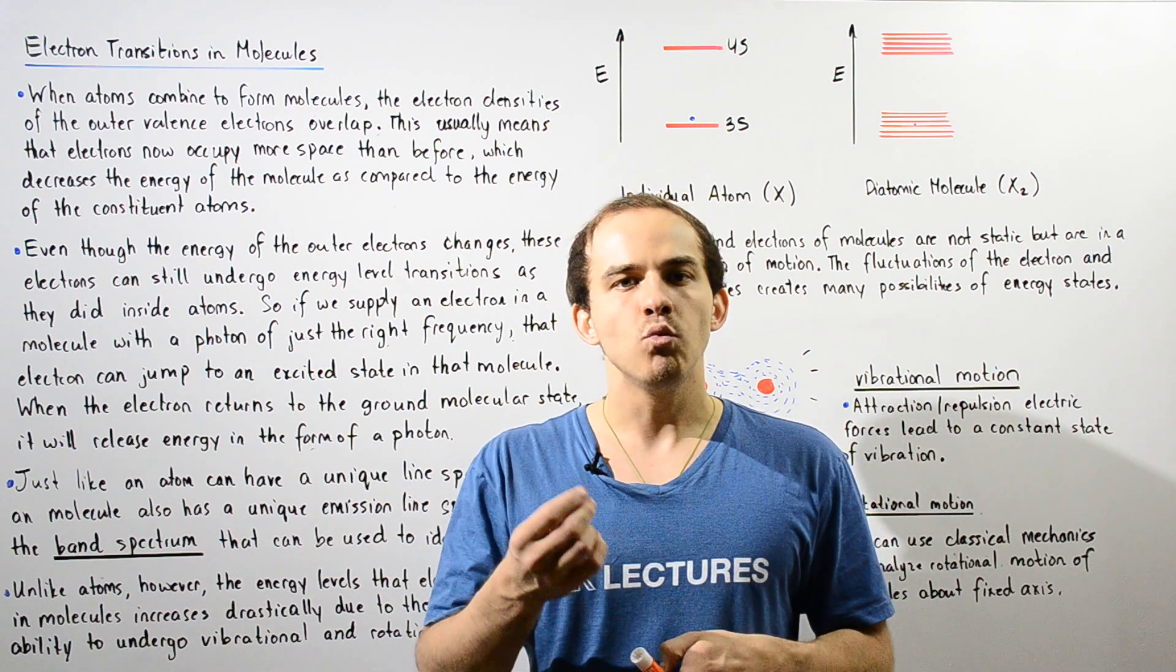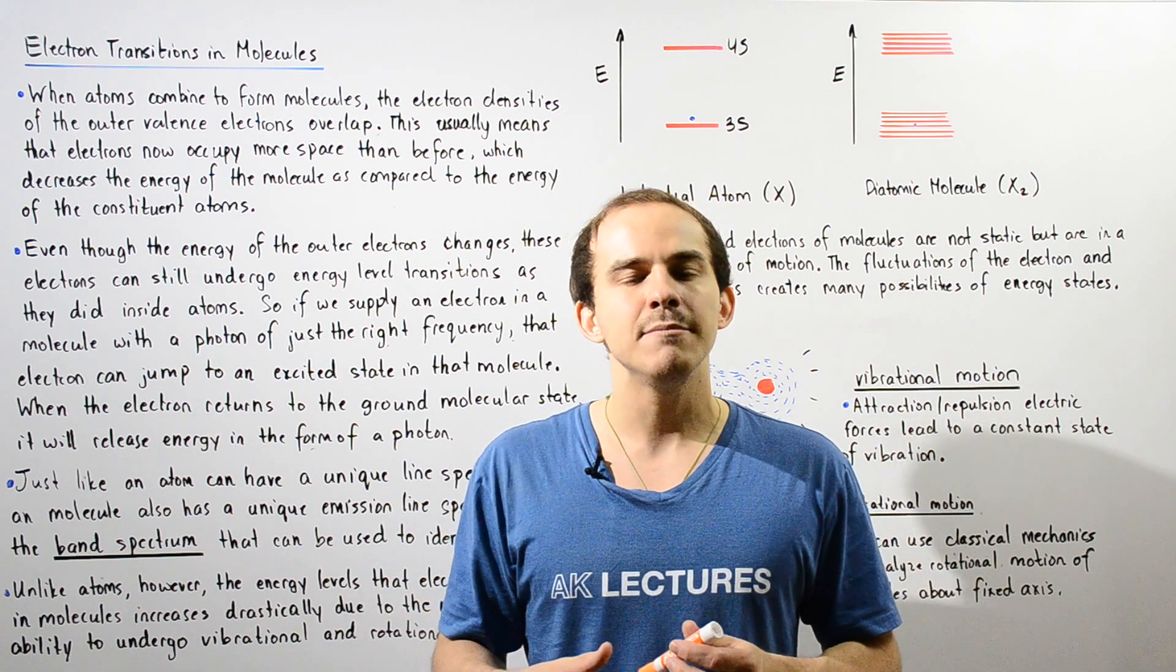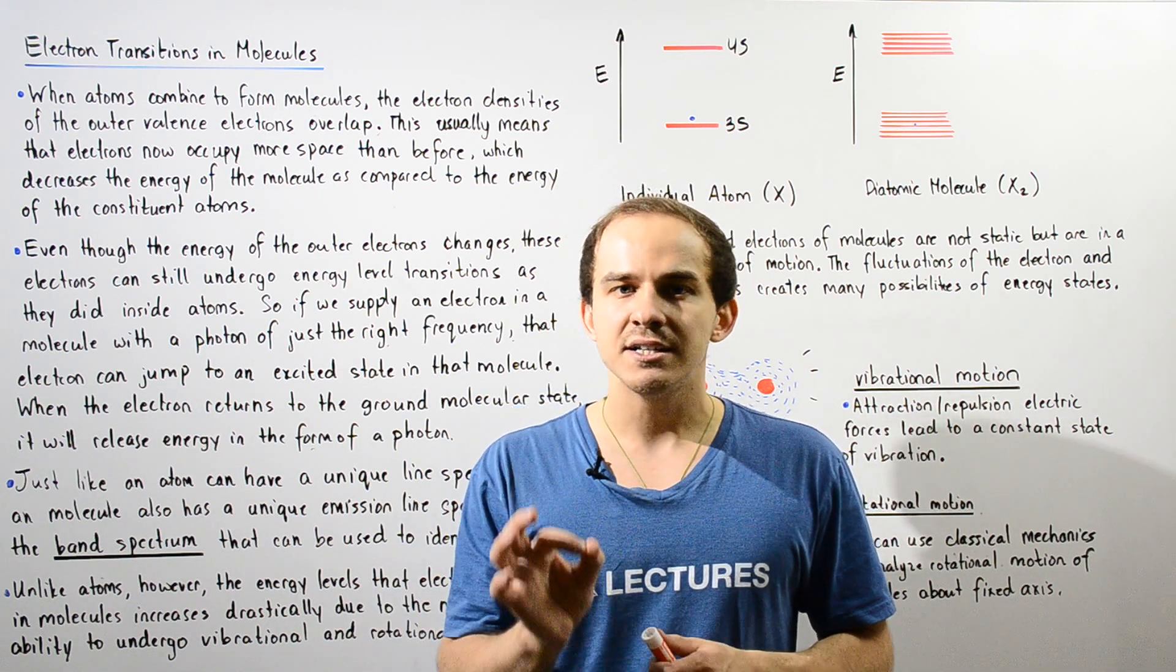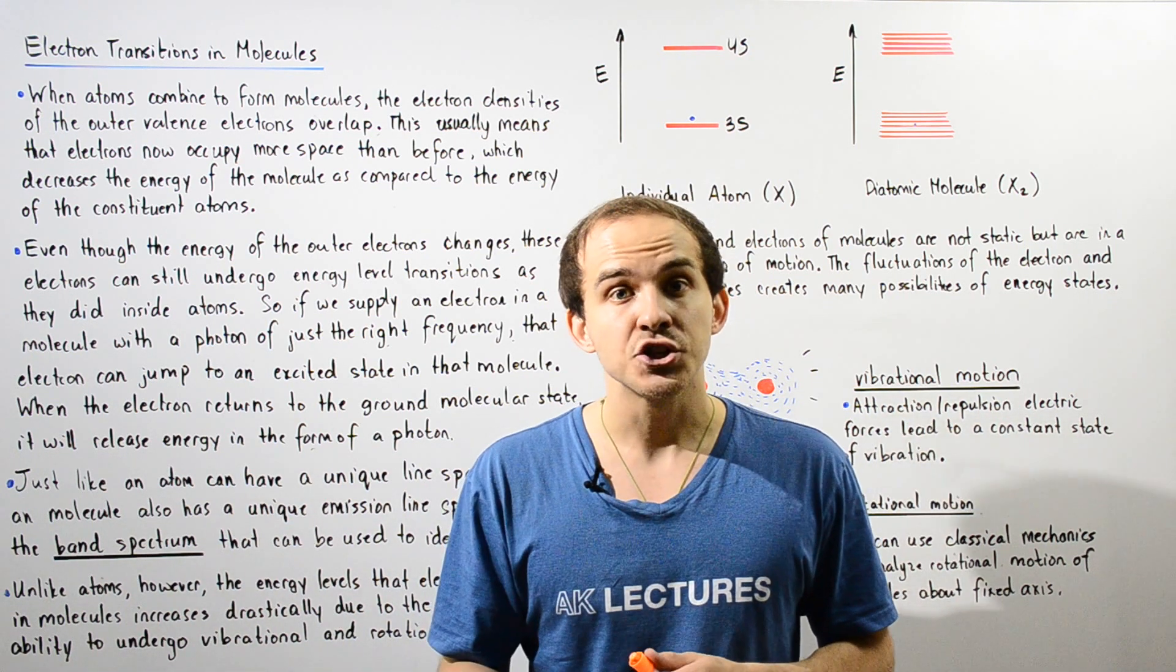As a result of that overlap of electron clouds, the amount of space in which the electron can be found at any given moment in time increases. And because our electrons can now occupy more space, by Heisenberg's uncertainty principle, we know that if the volume increases, our energy will decrease.